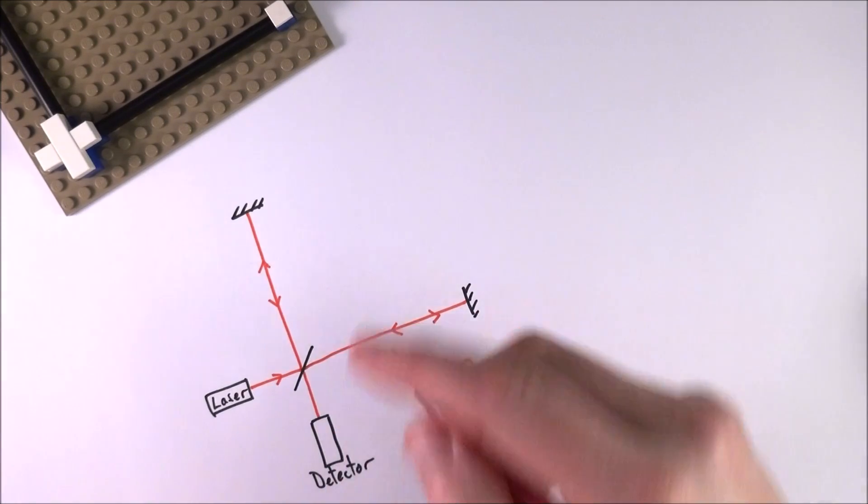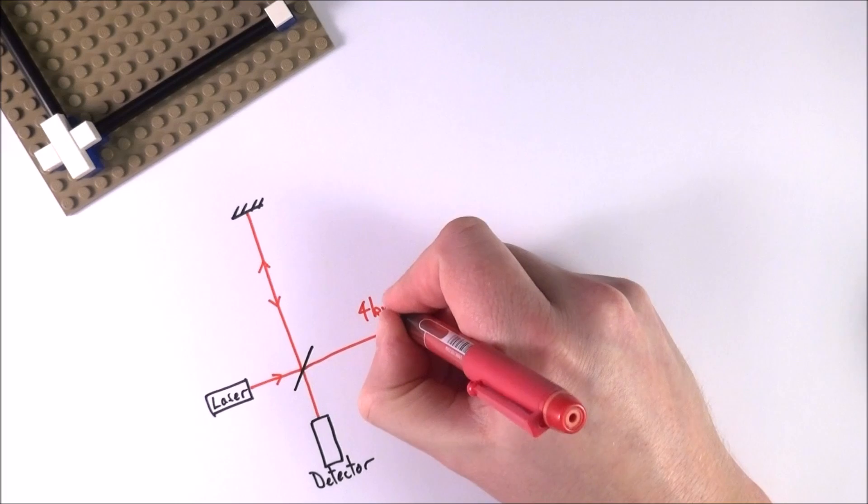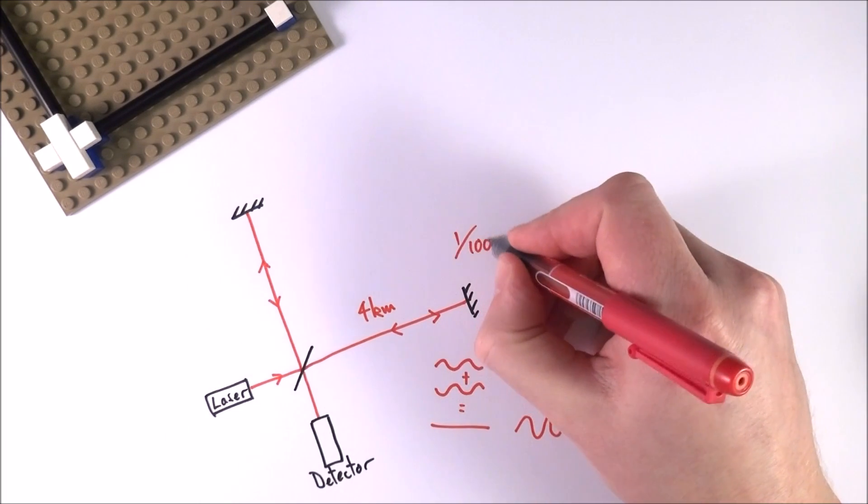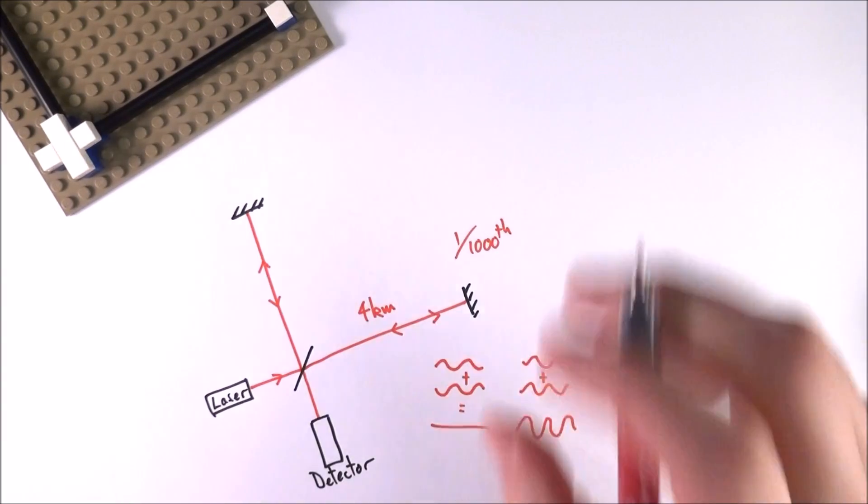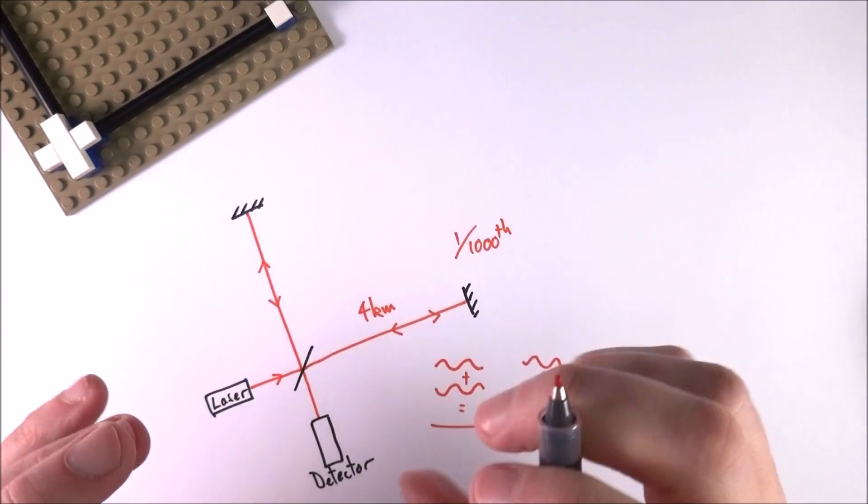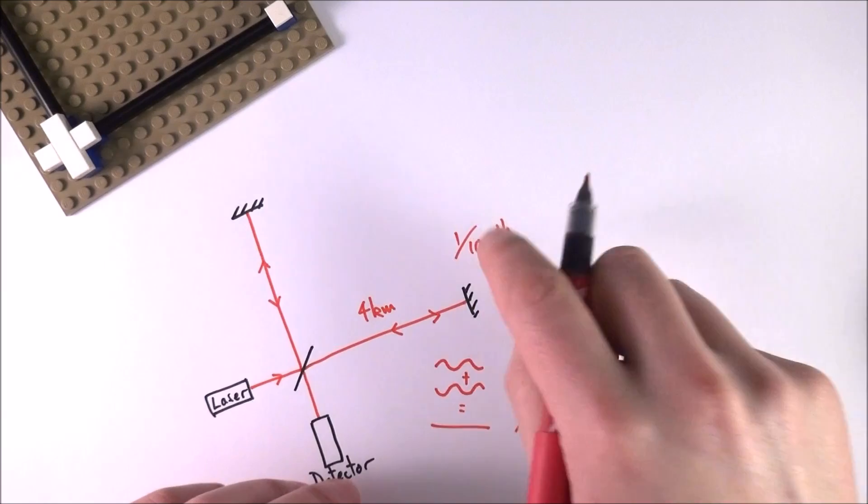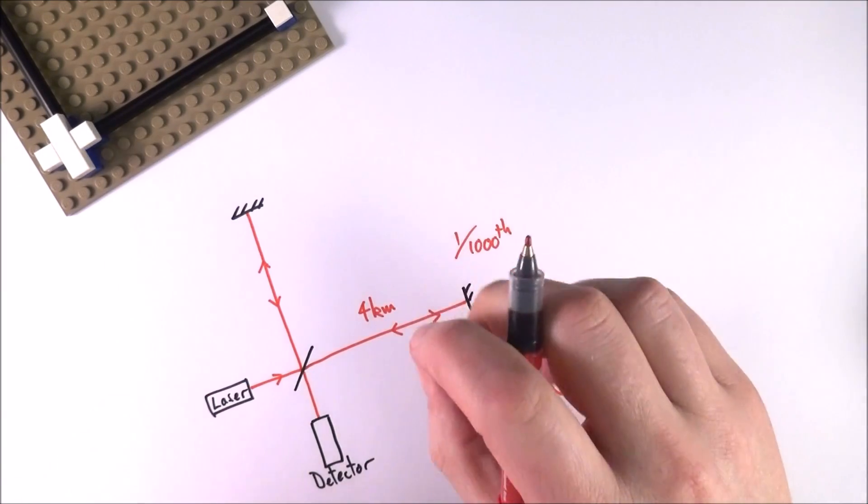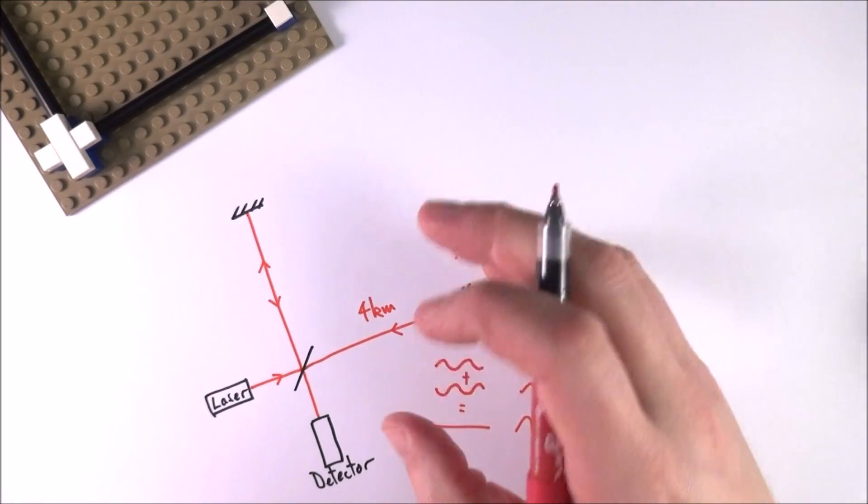In terms of the distances involved, this is about four kilometers, and the distance that has to move is about a thousandth of the diameter of a proton. That's the center of the atom, so the distance moved is absolutely minuscule. This is why it's taken so long—over a hundred years—to actually prove that Einstein was right.